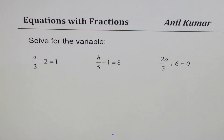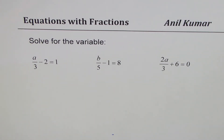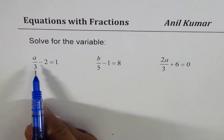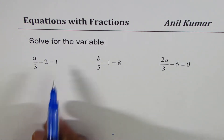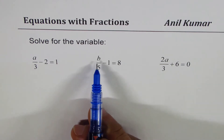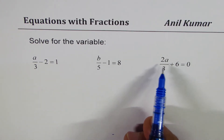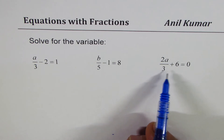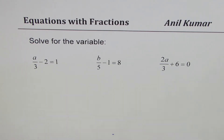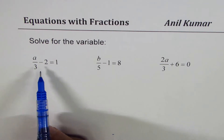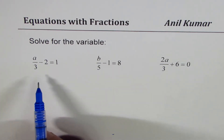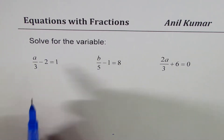I'm Adil Kumar. I've taken up three equations which have fractions in them. We will see how to solve them. The first one is a over 3 minus 2 equals to 1, b over 5 minus 1 equals to 8, and the last one is 2a over 3 plus 6 equals to 0. The variables are a, b, and a. So let's begin with the first one.